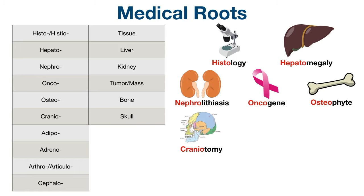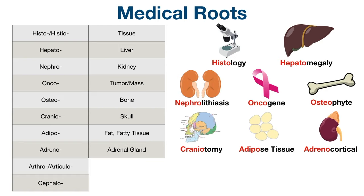Cranial refers to skull. You can think of craniotomy, which is a surgical opening into the skull. Next is adipo, which refers to fat or fatty tissue. Another way of saying fatty tissue or body fat is adipose tissue, which is the connective tissue consisting of lipid-rich cells. Adreno refers to the adrenal glands. It's easy to remember because adreno and adrenal sound similar. For example, adrenocortical refers to the outer layer of the adrenal gland.